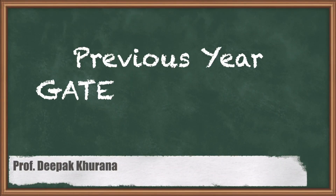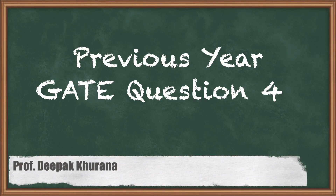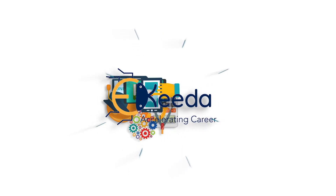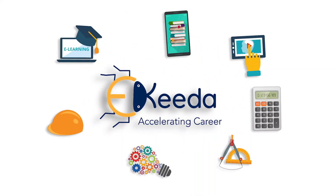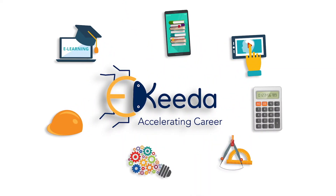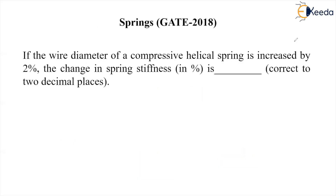Hello students, in this session let us solve a question on springs. If the wire diameter of a compressive helical spring is increased by two percent, the change in spring stiffness — whether it is increased or decreased — this we have to find out.